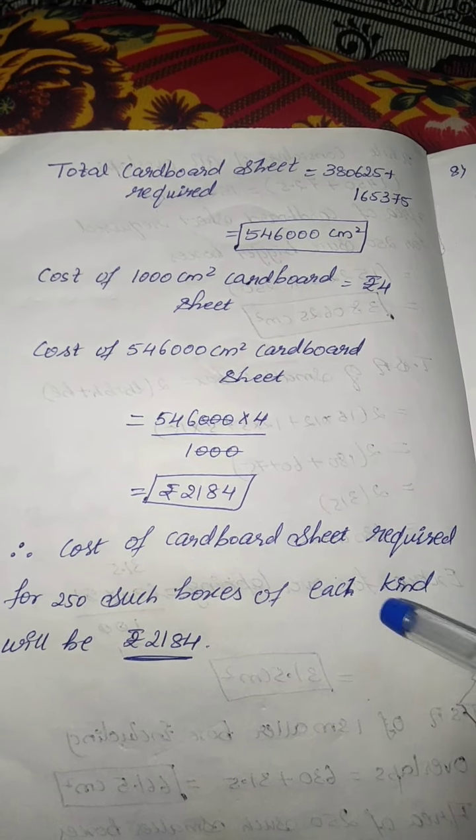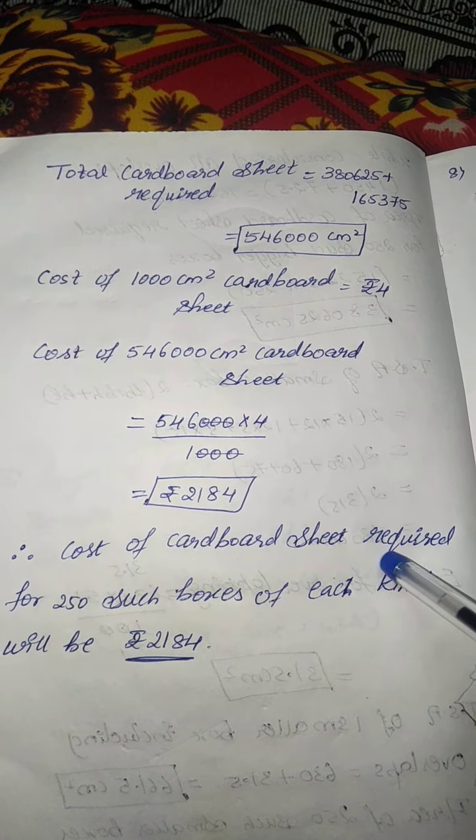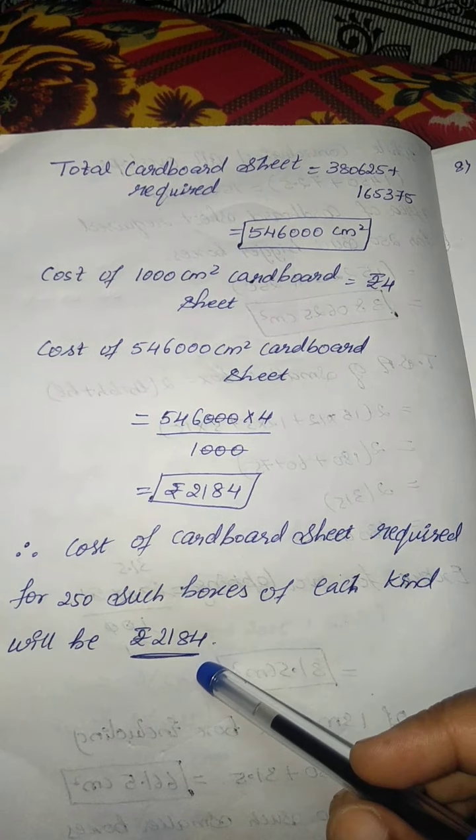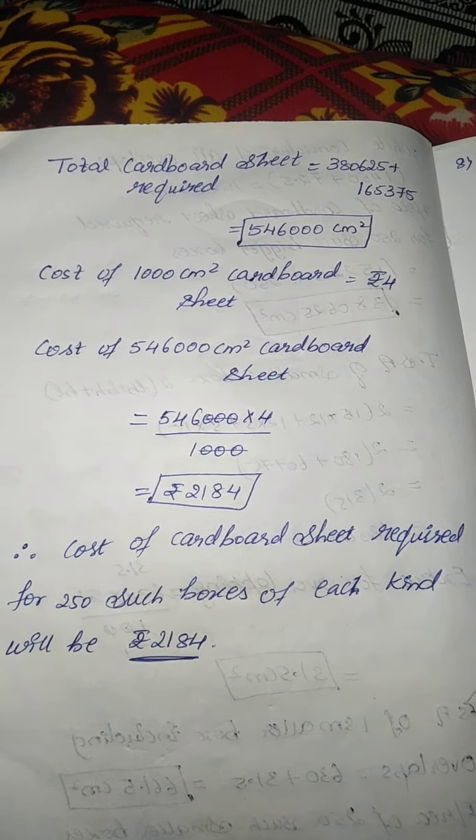So I am going to write the final conclusion as cost of the cardboard sheet required for 250 such boxes of each kind will be 2184 rupees.